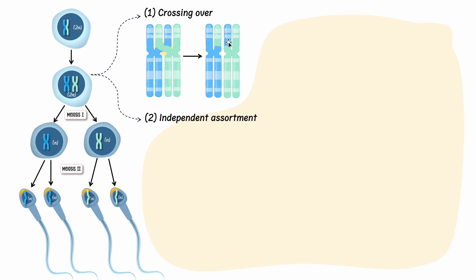This is important because without crossing over, the gametes we make would be very similar to your parents' DNA — one would have just your mother's copy and the other your father's copy. But because of crossing over, we can form gametes that are actually unique, having chromosomes that are a blend between the mother and the father's genes.